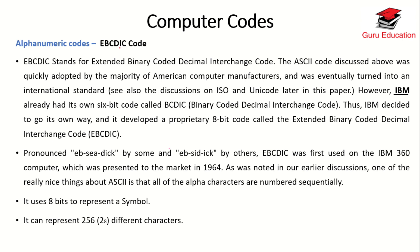After ASCII, the next code is EBCDIC. EBCDIC stands for Extended Binary Coded Decimal Interchange Code. The ASCII code we discussed was quickly adopted by the majority of American computer manufacturers — all computers understood it. Now a new code, EBCDIC, was introduced. IBM already had its own 6-bit code called BCD — Binary Coded Decimal Interchange Code — which had a size of 6 bits.